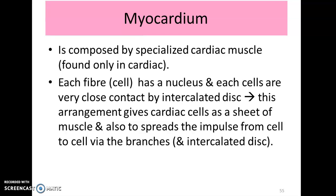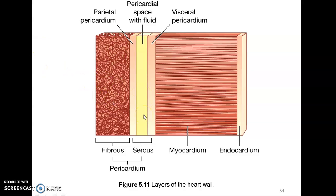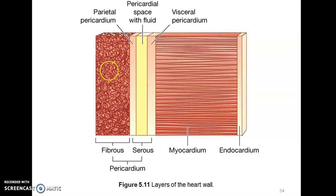The pericardial cavity normally contains nearly 5 to 30 mL of pericardial fluid, exuded by the serous layer of the pericardial sac. This fluid lubricates the membranes and allows the heart to beat with minimal friction. In cases of pericarditis — inflammation of the pericardium — both membranes become rough and produce a painful friction rub with each heartbeat.